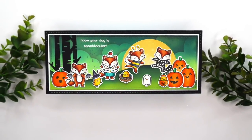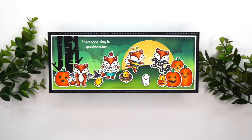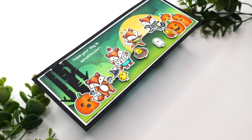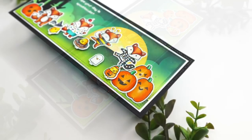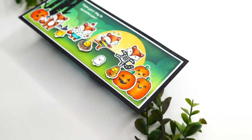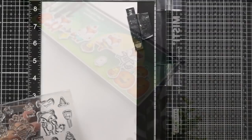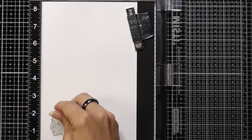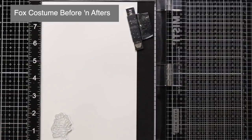Hi everyone, this is Mindy Egan and welcome back to another Lawn Fawn video. In today's card, I'm going to create a spooky Halloween background using the fox costumes before and after. This is a really fun background you can use for any combination of Halloween stamps.